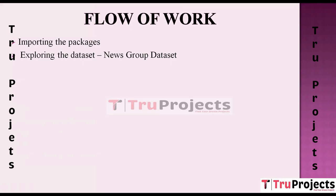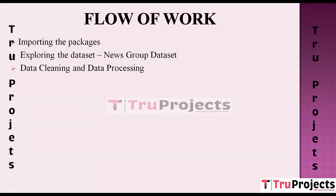The third module is data cleaning and preprocessing. The raw dataset is cleaned and pre-processed, including tasks like removing irrelevant information, handling missing values, and converting data into a usable format. For text data like news articles, this may involve removing stop words — common words like 'and,' 'or,' 'the' — punctuation, and performing text normalization such as stemming or lemmatization.